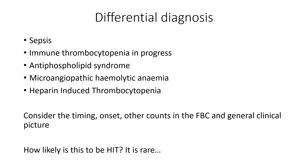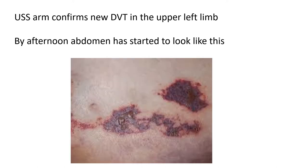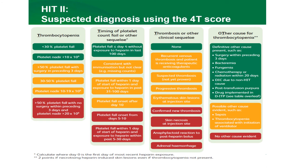Back to our patient: you've seen that the platelets have dropped and you're thinking about that swollen arm, so you do an ultrasound scan and confirm a new DVT in the upper left limb — despite the fact she's on low molecular weight heparin. That mild rash on the abdomen in the morning is starting to look a bit nasty by the afternoon — that looks like skin necrosis. So we diagnose this using the 4T score: you do this score, and if it's consistent with a potential for HIT, that's when you would call a haematologist and get permission to do the test.